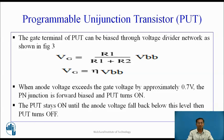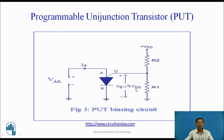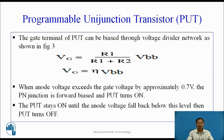The gate terminal of PUT can be biased through the voltage divider network as shown in Figure 3. Here, R1 and R2 act as a voltage divider network. Applying the voltage divider rule, VG is equal to R1 upon (R1 plus R2) into VBB. Here, R1 upon (R1 plus R2) is eta, the intrinsic standoff ratio. So, VG is equal to eta into VBB. When the anode voltage exceeds the gate voltage by approximately 0.7V, the PN junction is forward biased and PUT turns on. The PUT stays on until the anode voltage falls back below this level, then PUT turns off.